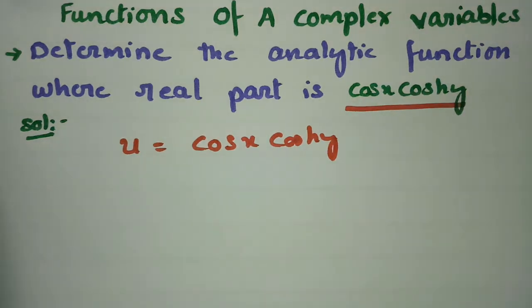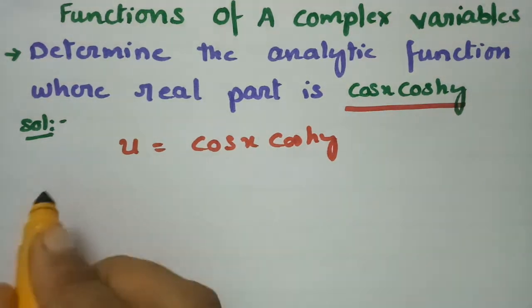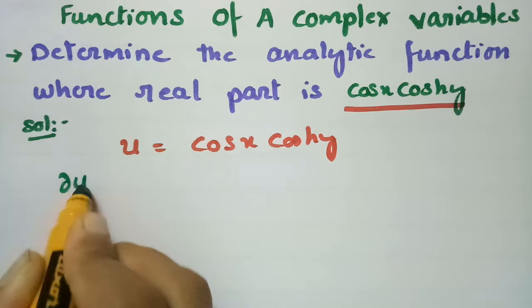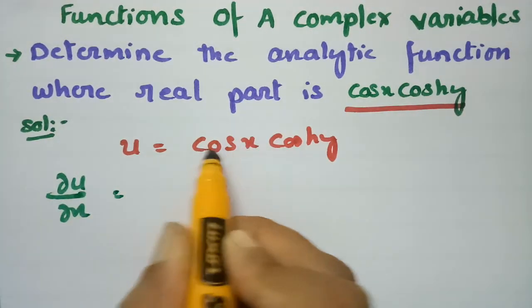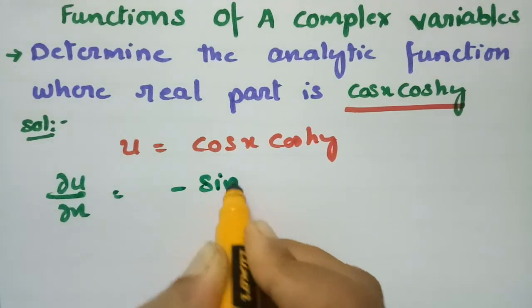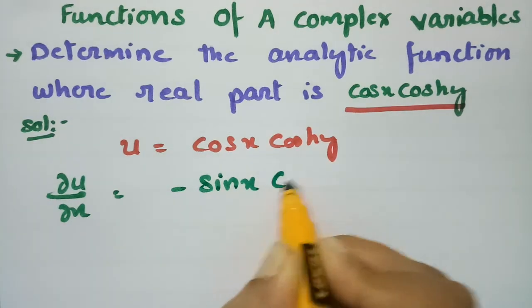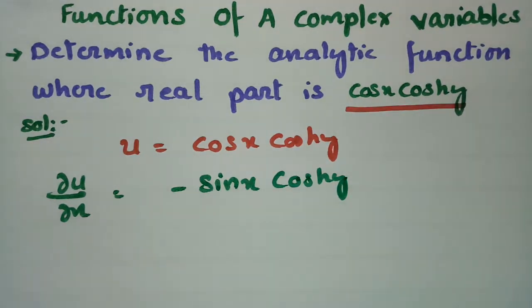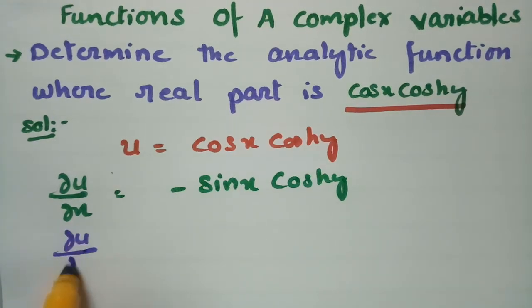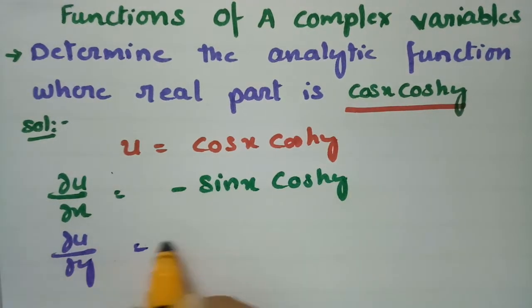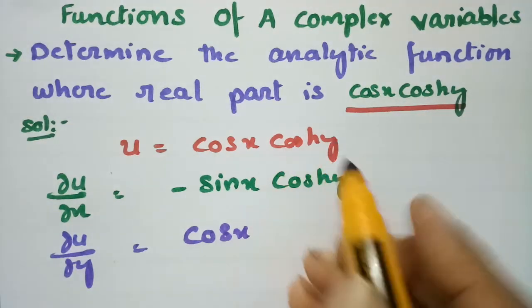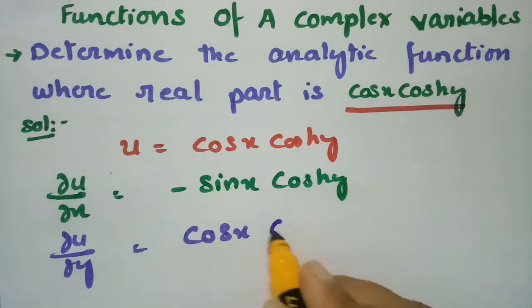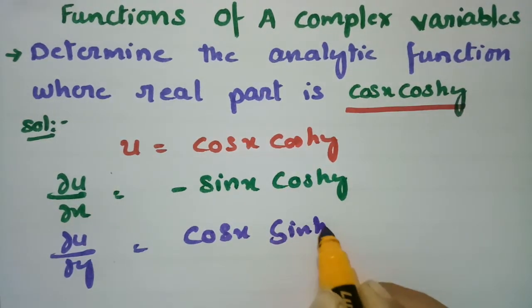First, I am going to take the derivative with respect to x: ∂u/∂x. With respect to x, cos(x) becomes -sin(x), and cosh(y) remains, giving -sin(x)·cosh(y). Then taking the derivative with respect to y: ∂u/∂y. cos(x) stays as it is and the derivative of cosh(y) is sinh(y), giving cos(x)·sinh(y).